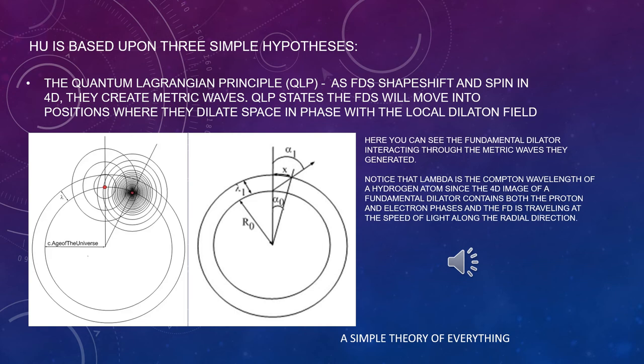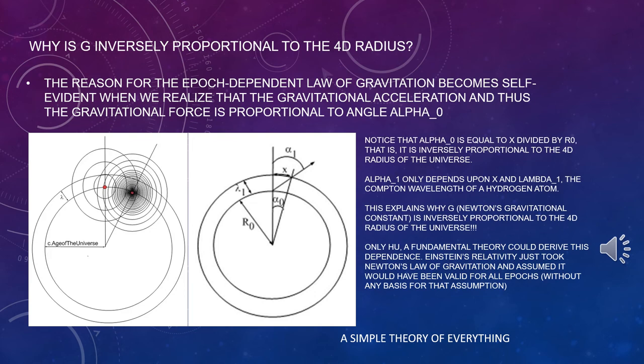Notice that to satisfy the quantum Lagrangian principle, QLP, the fundamental dilator has to move x to the side. That can be done in two ways. One is shown where the fabric of space just twists by alpha 1. That has the highest twisting angle and thus the highest acceleration. The second way is to just slide on the fabric of space and have its normal aligned with the radial direction. That is mapped to gravitation. The elasticity of space introduces a residual twist extremely small when compared with electromagnetism, alpha 1, but significant when compared with gravitation, alpha 0. HU uses this residual twist to derive the natural frequency of space deformation waves.